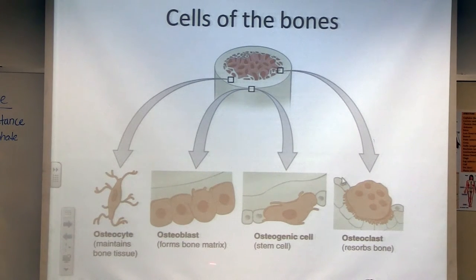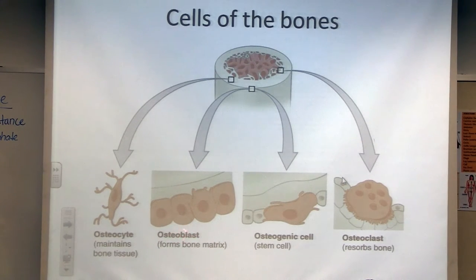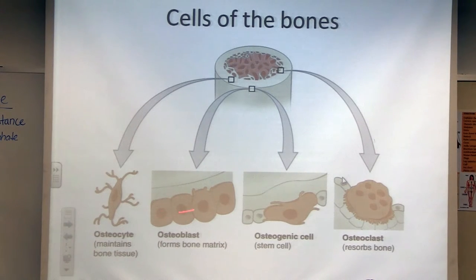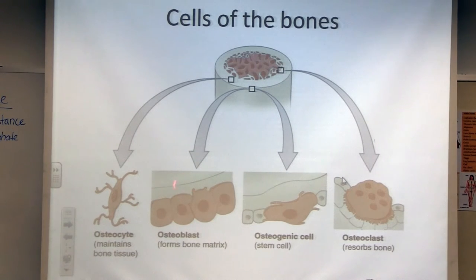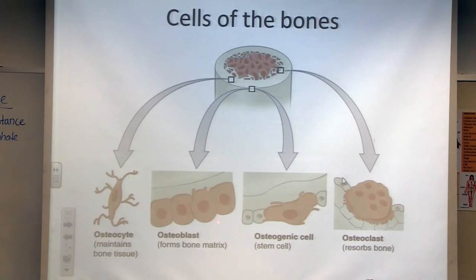The osteogenic cells develop into the young osteoblasts — I call these our builders. The 'B' in osteoblast helps remember that these are the builders. They form the bone matrix. These osteoblasts, underneath the periosteum, will bring in calcium and phosphate from the bloodstream and deposit it into the bone itself, helping with bone deposition.